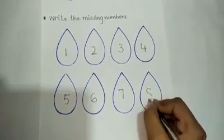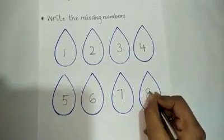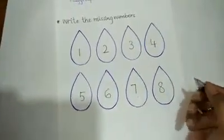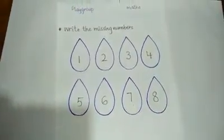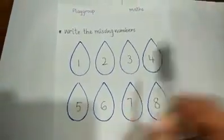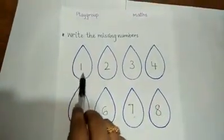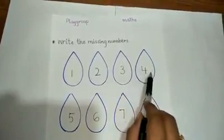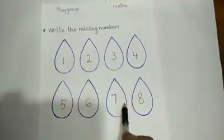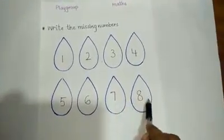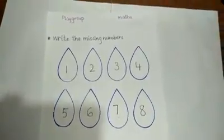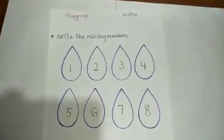Eight is like a sleeping snake. So these are the missing numbers. Let's recall once again — one, two, three, four, five, six, seven, eight. Thank you, students! Bye bye!